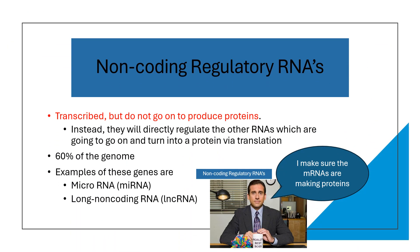Normally when we think about genes, we imagine them being turned into proteins, but some genes have different jobs. These genes are transcribed — their DNA is copied into RNA — but they don't go on to produce proteins. Instead, these special RNA molecules directly regulate other RNAs that will eventually turn into proteins through a process called translation. Think of them like managers overseeing the production process. These non-protein-coding genes make up about 60% of our genome — that's a pretty big chunk.